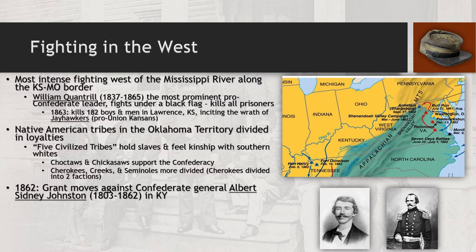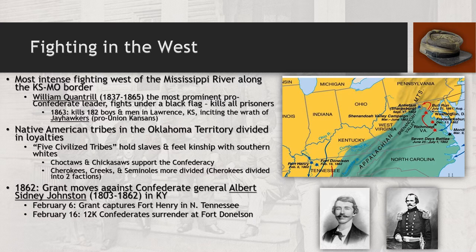In 1862, Grant decides to move against Confederate General Albert Sidney Johnston in Kentucky. Grant manages to capture Fort Henry in northern Tennessee in February, and ten days later on February 16th, 12,000 Confederates end up surrendering Fort Donelson. These are both major victories for the Union. The capture of Fort Donelson becomes the first major Union victory celebrated in the North — a real turn of fortunes, even though the Union had already lost the first battle to the Confederate side.